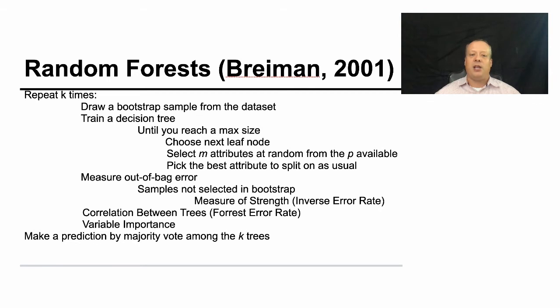And you measure how well that decision tree does on the samples that were not in the bootstrap. And so what that tells you is how good this tree is in general across your whole training data. This gives you a measure of strength of this error. You're also going to measure the correlation between the trees, like how often do they misclassify the same examples over time. And that's going to give you a measure called the forest error rate.